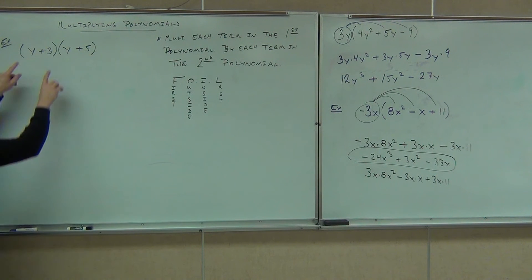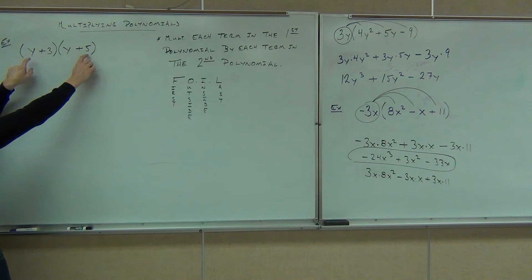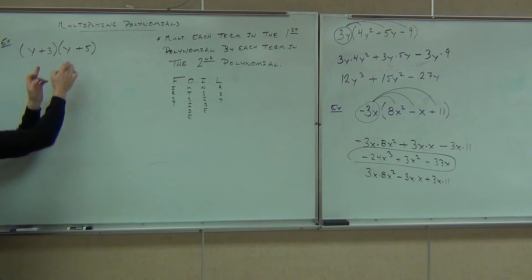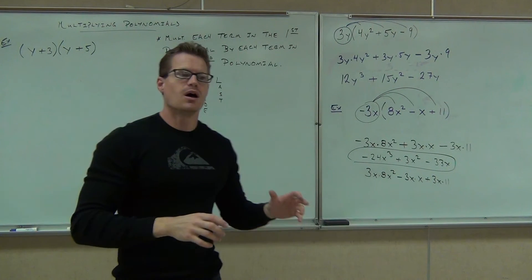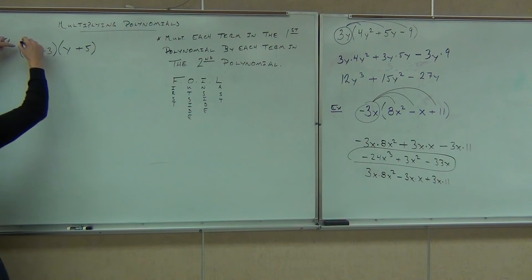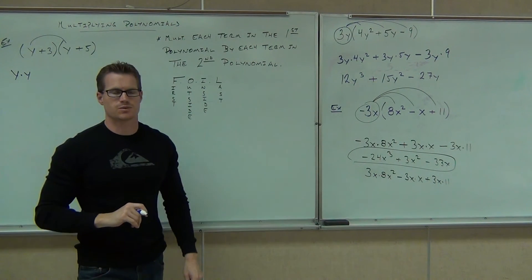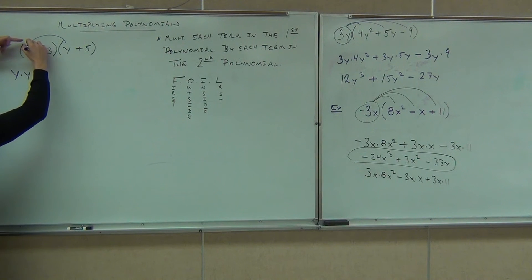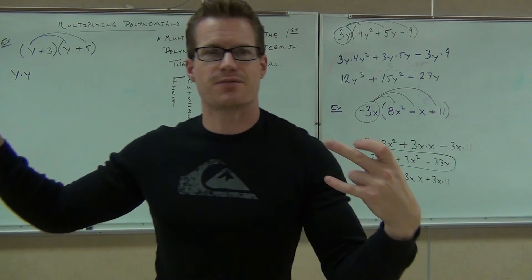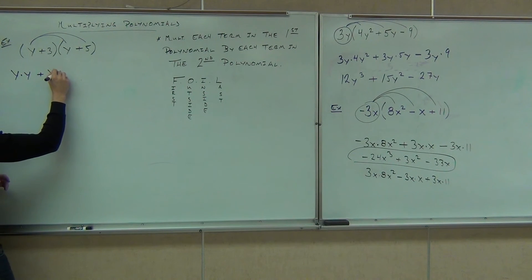Look at the board. The first terms are Y and Y — you multiply those first. The outside terms are these ones on the ends. These would be my inside terms, and these would be my last terms. This is just a way so you get every term times every term. Your first terms: Y times Y. Next up, outside: Y times 5. Positive Y times positive 5 is positive, so I write a plus — plus Y times 5.